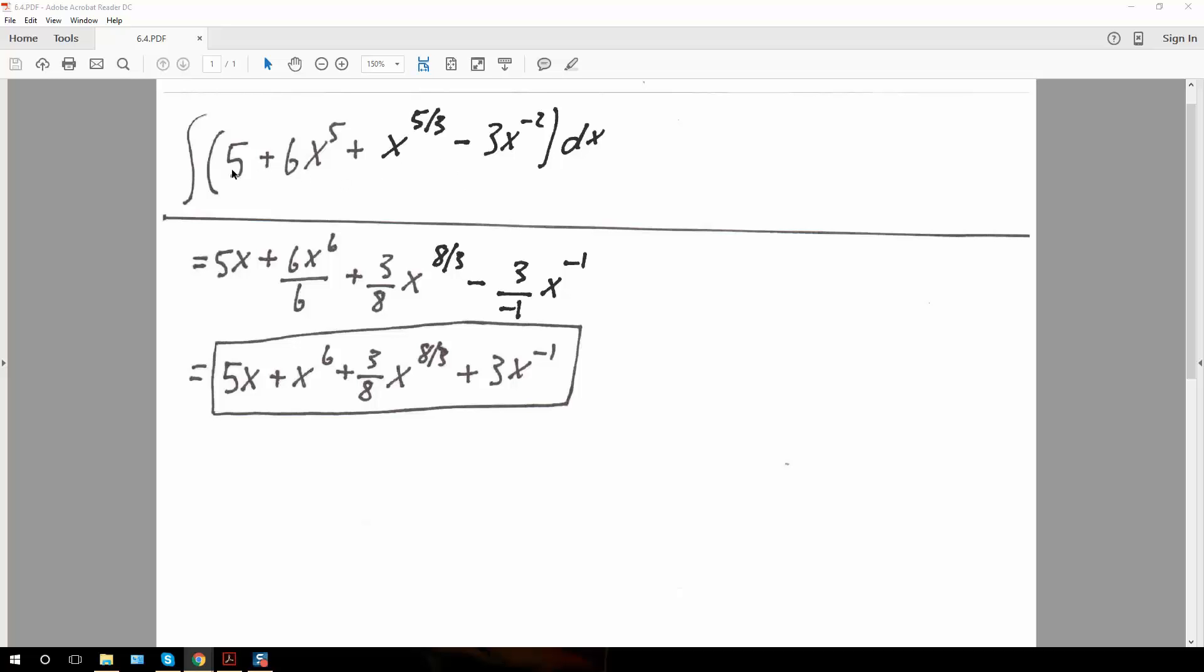So 5 would become 5x, and we have this, so 5 plus 1 is 6, and then we divide by 6. So we would have 6x to the 6th divided by 6.